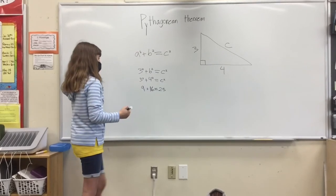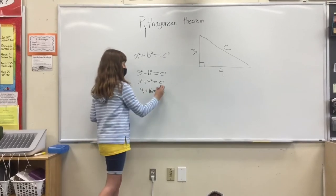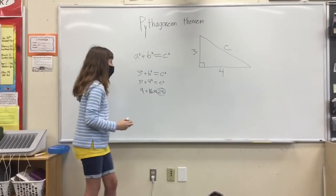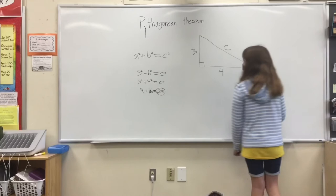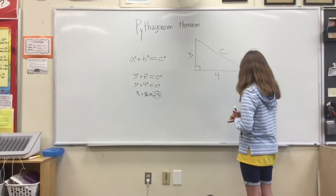And now, all we have to do is find the square root of 25 to find c. So the square root of 25 is 5.